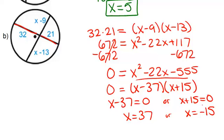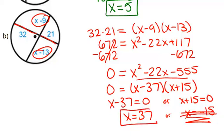Now if we look back into the context of the problem, X equals negative 15 doesn't make sense. Because that would mean that each of these lengths was a negative length. And you can't have a negative length. So that means the only real answer is X equals 37.